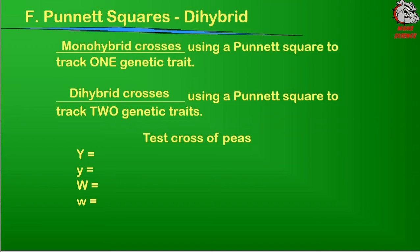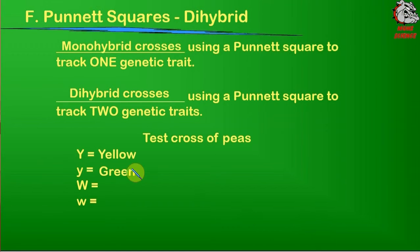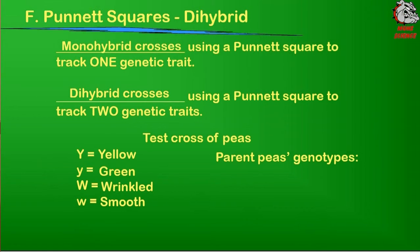The test cross we're going to do here is peas, and the traits we're looking at are going to be green peas and yellow peas. The dominant trait is yellow and the recessive trait is green. The other trait we're looking at is seed shape, where the dominant trait is wrinkled and the recessive trait is smooth.